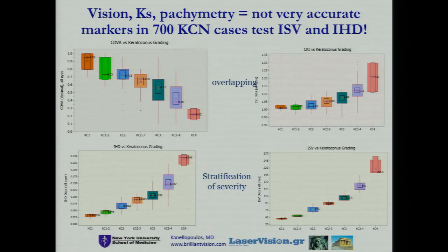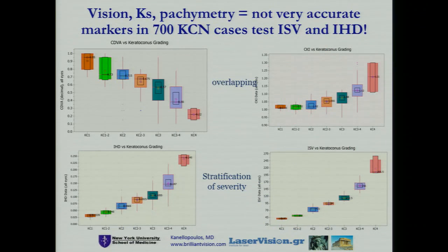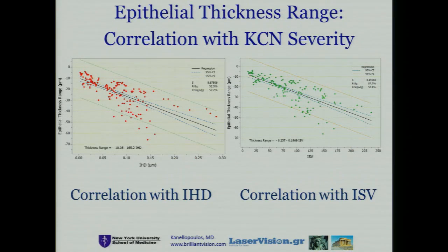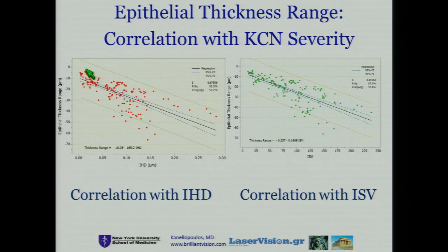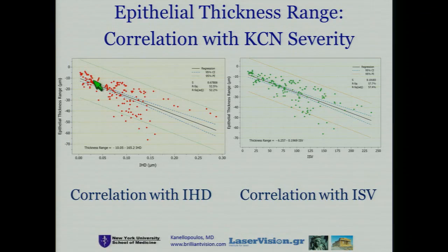Here are some other results. We see a correlation with IHD and ISV, but the most important is to see, in mild keratoconic eyes, how epithelial thickness correlates with IHD and ISV.